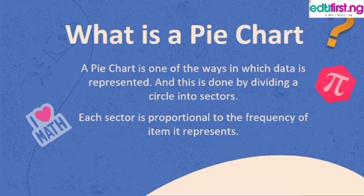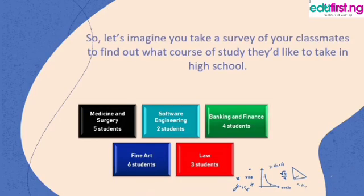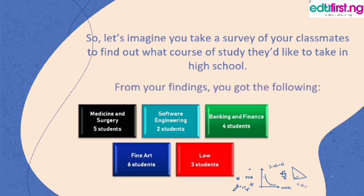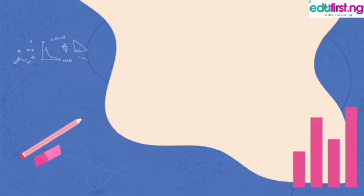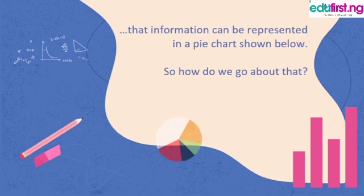Each sector is proportional to the frequency of the item it represents. For example, let's say you take a survey of your classmates to find out what course of study they'd like to take in high school. From your findings: five students want to read medicine and surgery, two students want software engineering, four students want banking and finance, six students want fine arts, and three students want law.